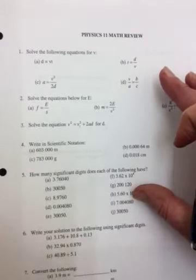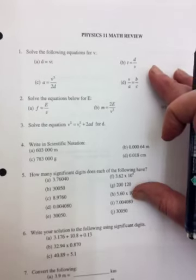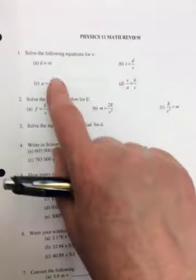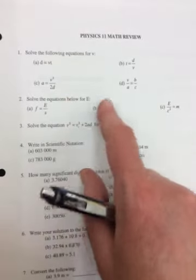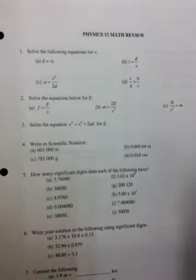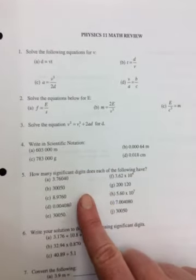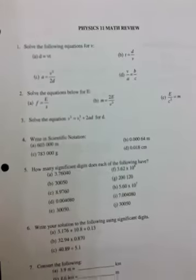But your homework for today, how about the first five? I'm hoping they don't take very long. The first ones are just rearranging, but the equations are much simpler than what we just did here. And then number four, write it in scientific notation. Number five, how many significant digits.